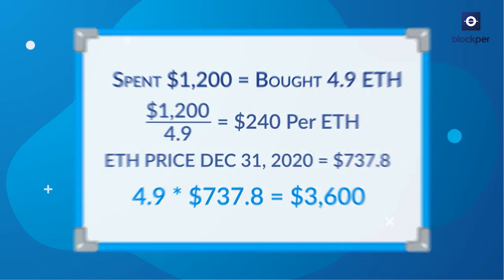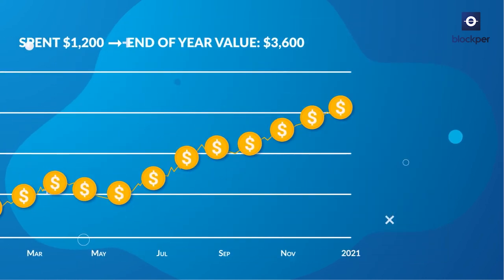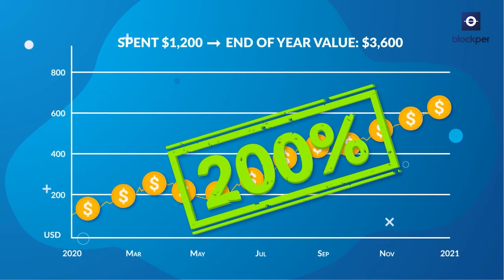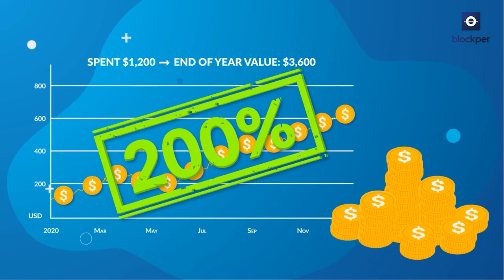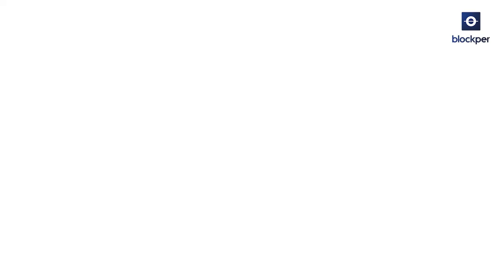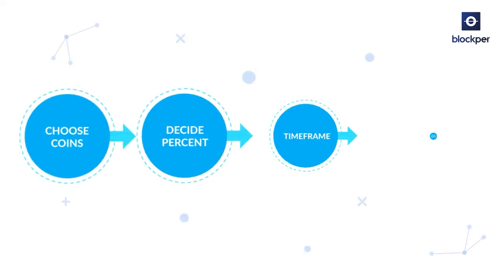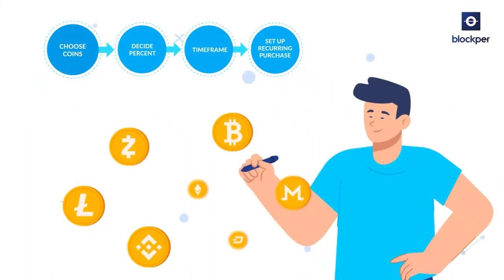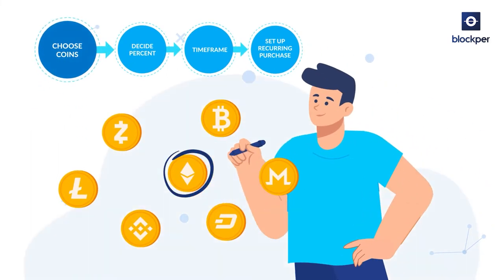Meaning your 4.9 ETH would be worth around $3,600. So if you had used this strategy, you would have a $1,200 return on your investment of $1,200 and earned a profit of $2,400 in just 12 months. There are four steps to DCA. First, choose the crypto coins you want to buy.